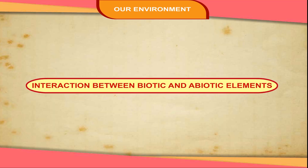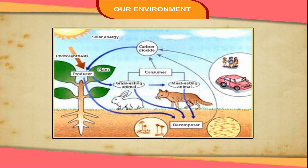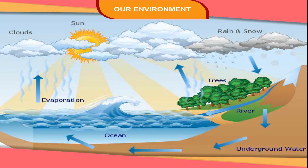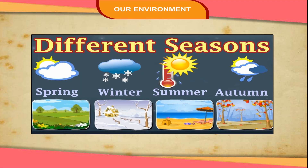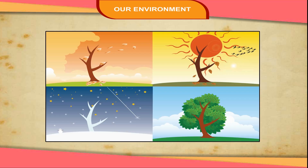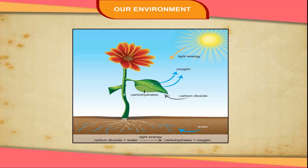Interaction between biotic and abiotic elements. The biotic and abiotic elements of the environment are dynamic in nature. As the sun is the major source of energy, all the changes in the abiotic environment are powered by solar energy. The constant circulation of air and water brings about changes in the climatic conditions in different seasons. These changes affect the biotic components. All living organisms, plants and animals depend on abiotic environment for their food.